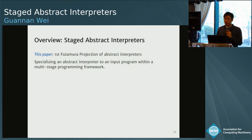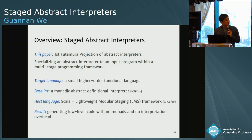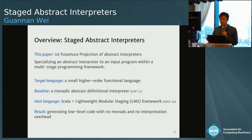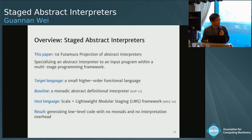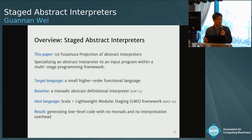In summary, we can construct the first Futamura projection of abstract interpreters — in other words, we can specialize an abstract interpreter to an input program within a multi-staging framework. For static analysis, we consider a small higher-order functional language as target: basically lambda calculus extended with data types, recursions, and conditionals. The baseline is a monadic big-step abstract definitional interpreter shown at ICFP in 2017. We implement our staged abstract interpreter in Scala using the Lightweight Modular Staging framework. The result is that we can generate low-level code — there are no monads and no interpretation overhead in the generated code.